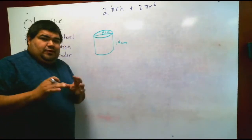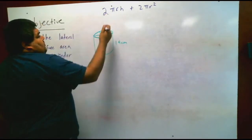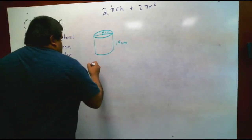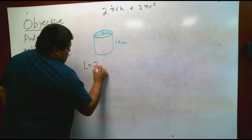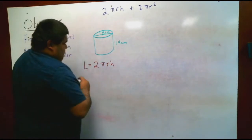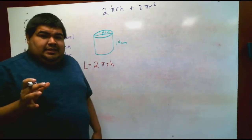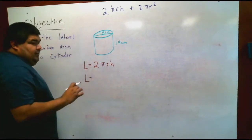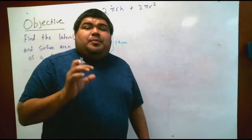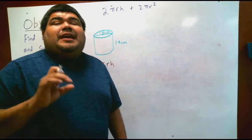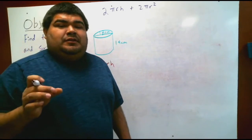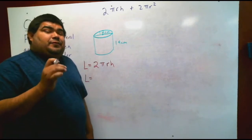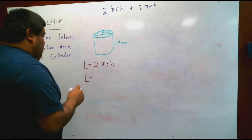For lateral area we only need the first part of the equation: lateral area equals 2 pi r h. Notice we have r and h. We don't have r directly — we have a diameter — so all we have to do is cut that diameter in half to find the radius. Since the diameter is 12, half of 12 is 6, giving us a radius of 6.